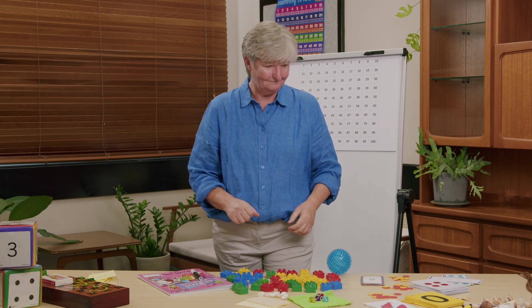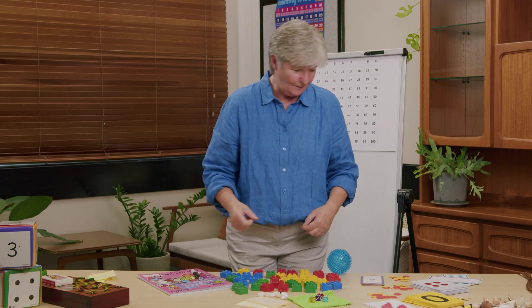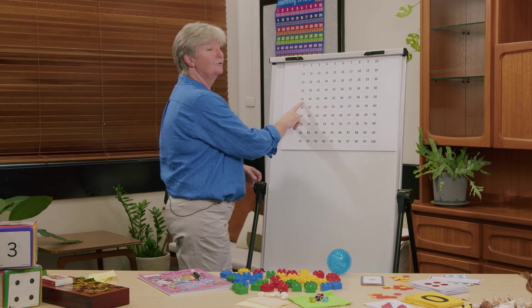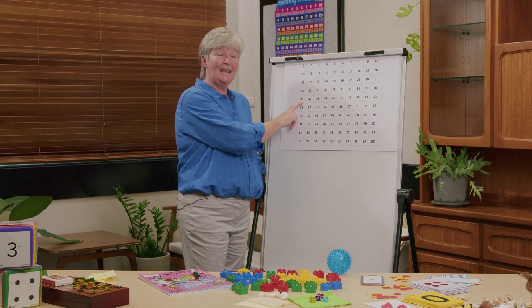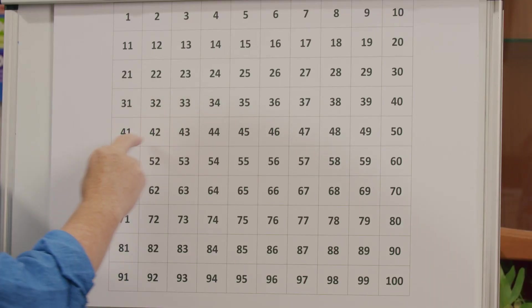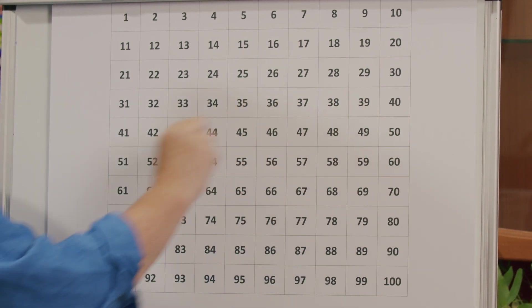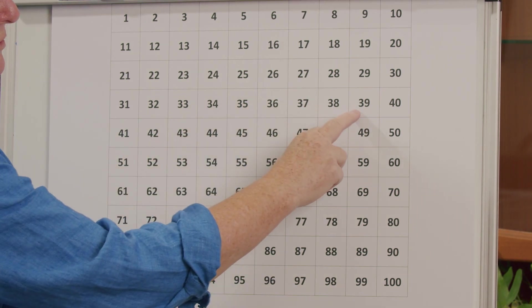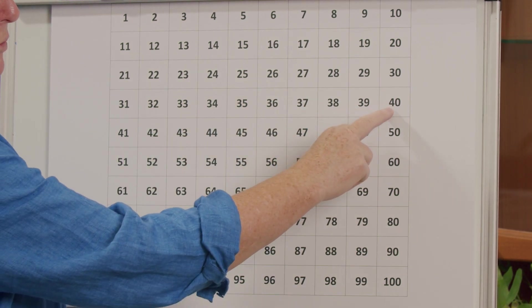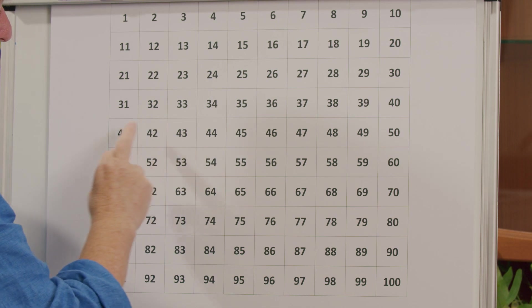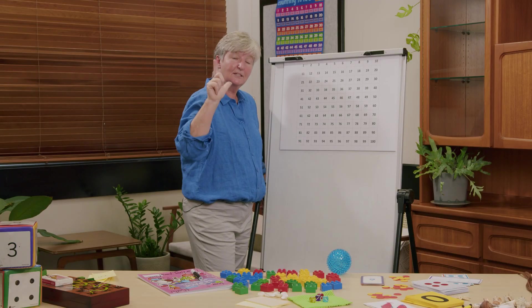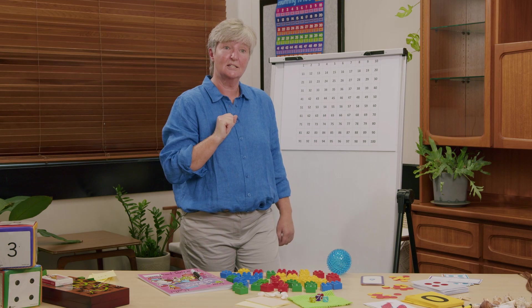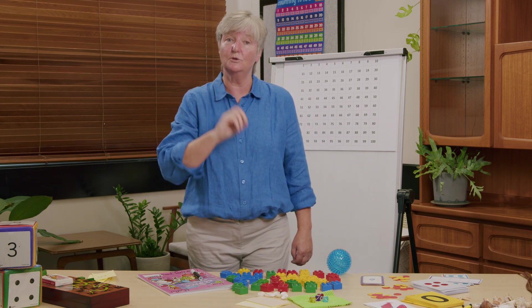Was I close to my estimate? Who remembers what my estimate was? I was so close! Let's have a look — my estimate was 41, and how many did I actually have? I had 39. What's the difference between 41 and 39? If I go from 39, one more makes 40, and one more again makes 41 — I was only two out from my estimate. Estimating first is very useful and mathematicians do it all the time.